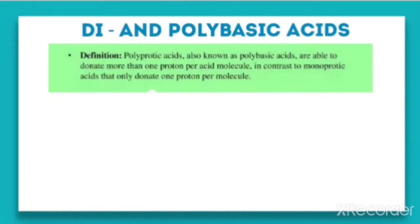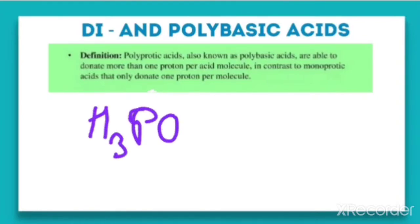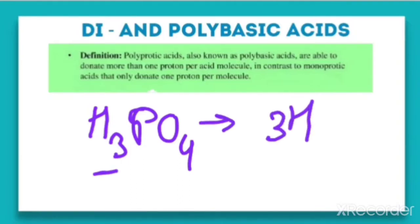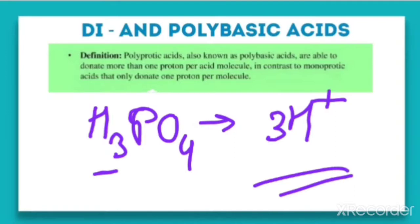Phosphoric acid, H3PO4, can donate three H⁺ ions because there are three hydrogens. It has three ionizable protons per molecule, therefore it is called a tribasic acid. So a polybasic acid is defined as an acid which can donate more than one proton per acid molecule, and it can also be called a polyprotic acid.